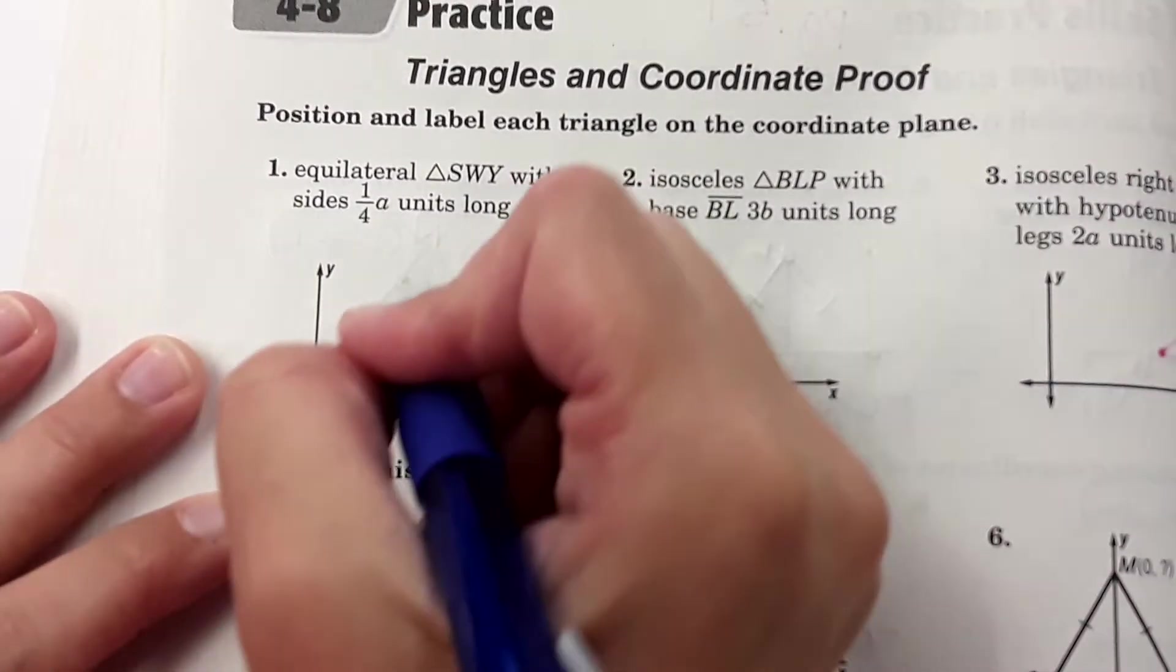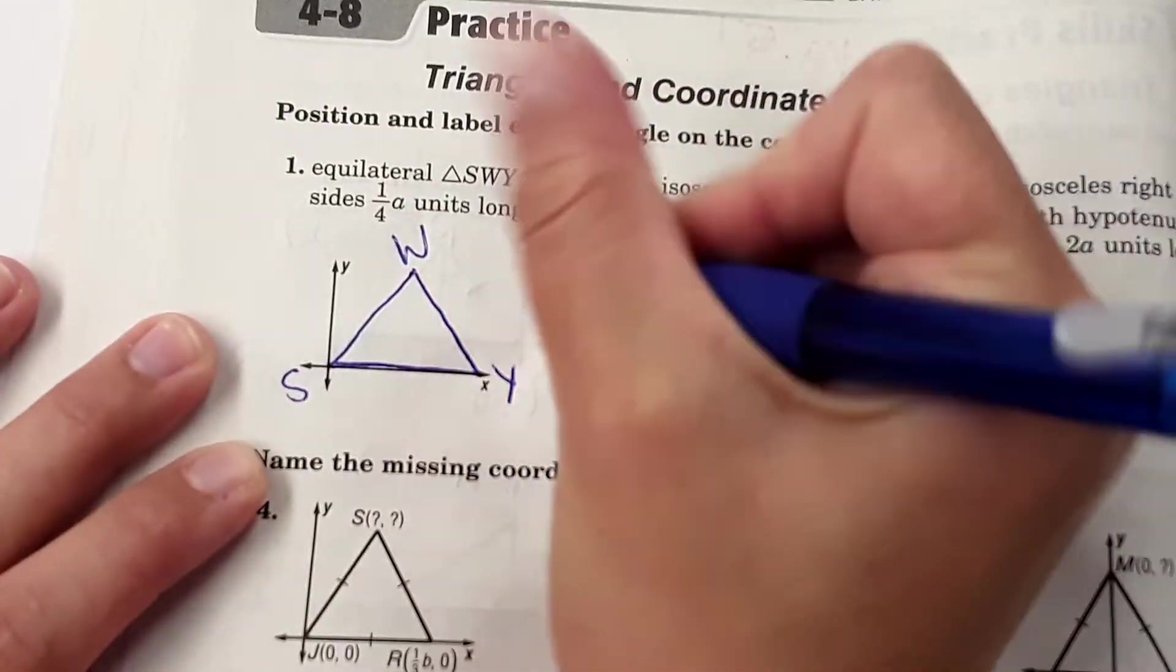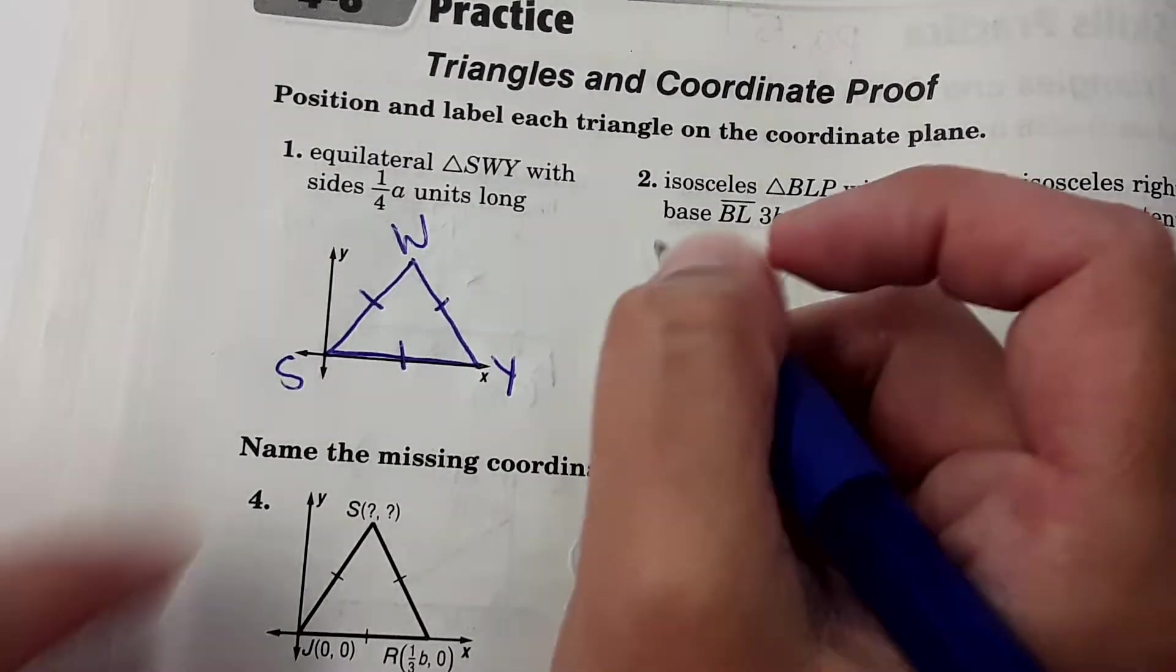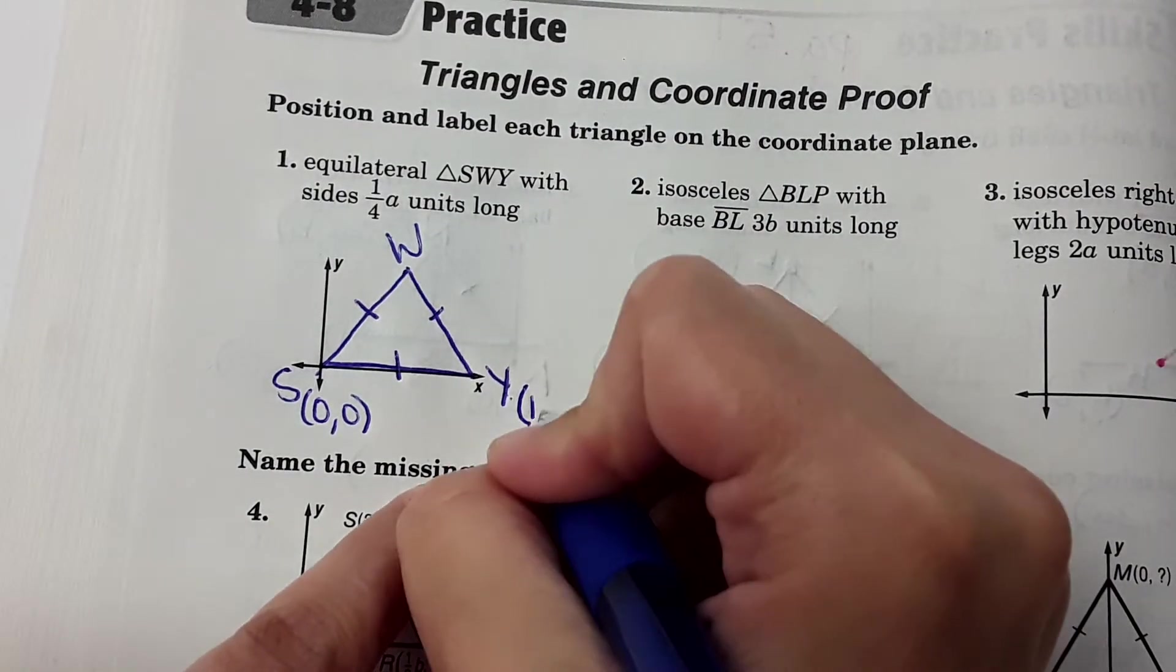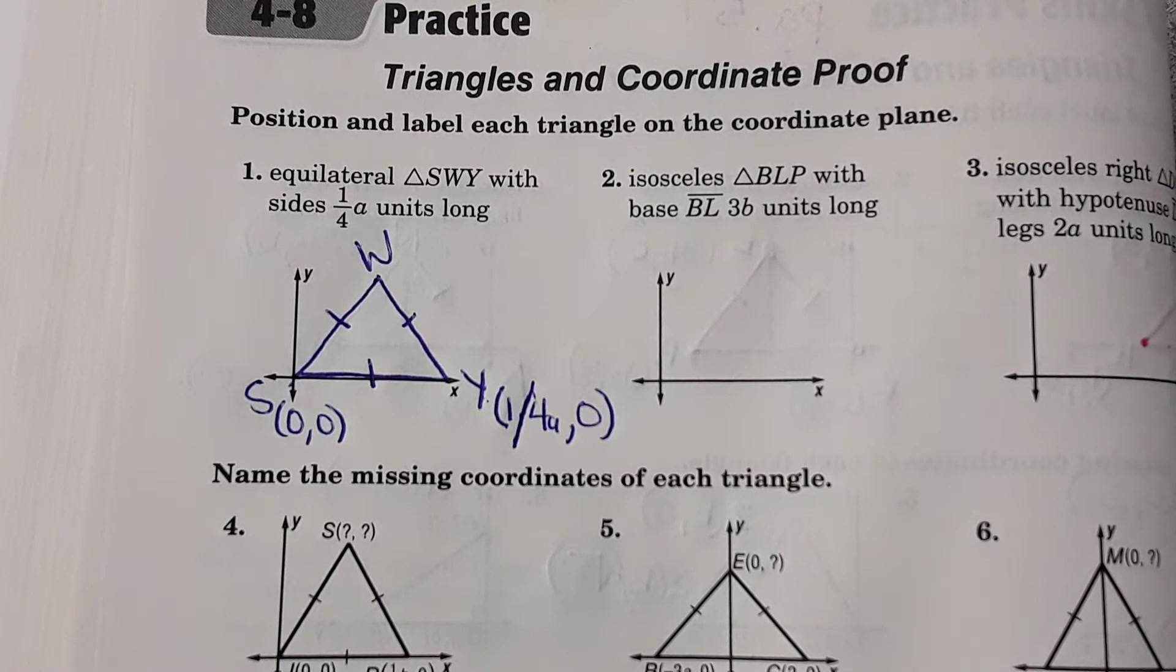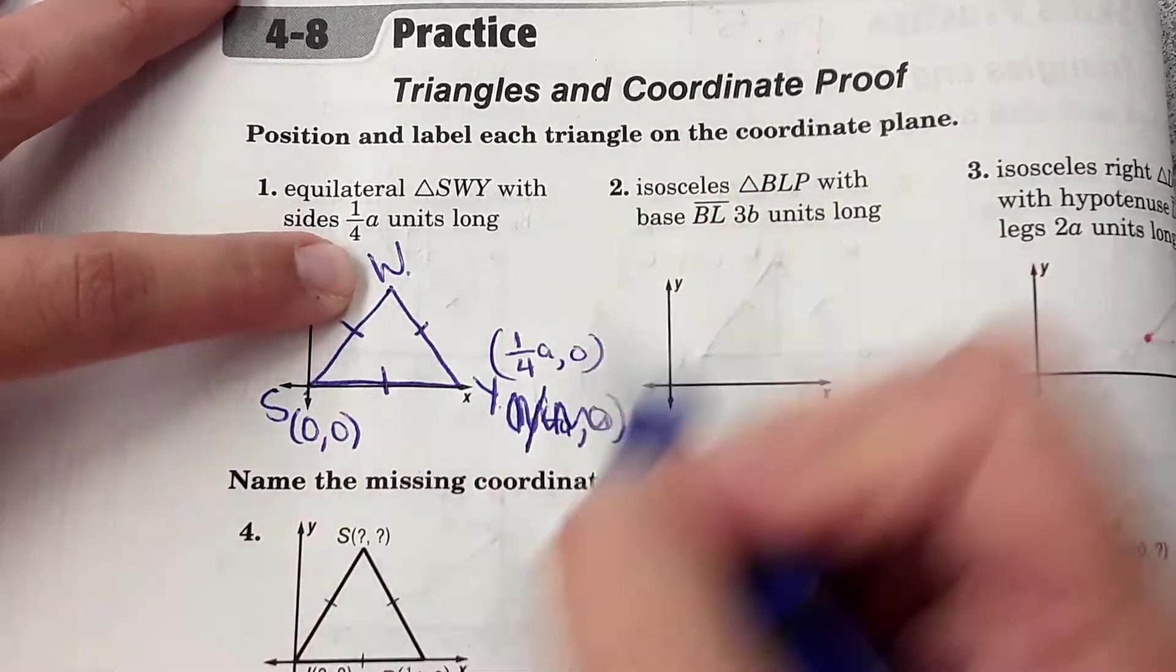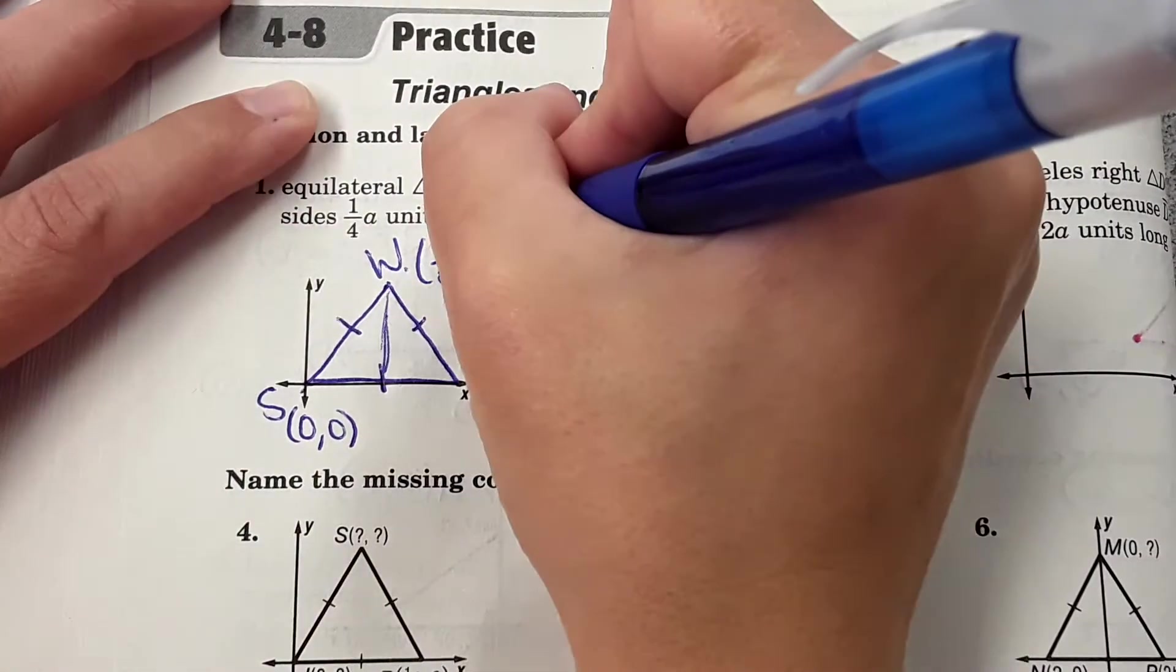Okay, so number one says equilateral triangle SWY. So I'm going to draw that here. S W Y. Equilateral, so all the sides are the same length. It says with sides one fourth A long, so from here to here would be one fourth A. So our point here would be zero zero, and then here would be one fourth A, zero. And Y will be one eighth. I don't like the way of formatting that: one fourth A, zero. And then W would be halfway. Half of one fourth is one eighth, so one eighth A. And then the height, just choose the letter B.